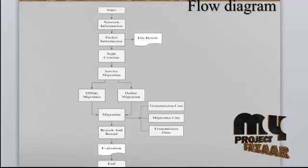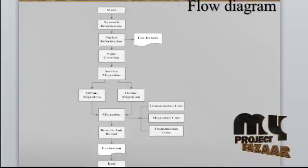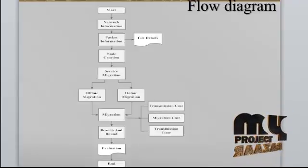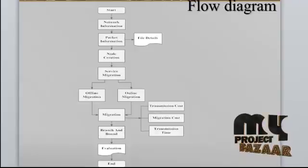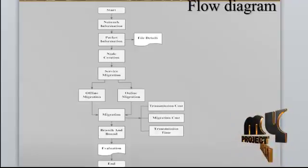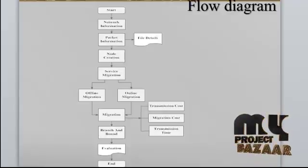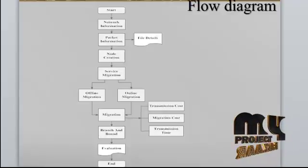Let's see the data flow diagram of this project. The first module is network information. In this module, we are getting the network information such as IP address, MAC address, username of the system, system name, OS version, HDD number, processor, BIOS, CPU, CPU speed, physical memory, system directory, and monitoring size, and save these details into the database.